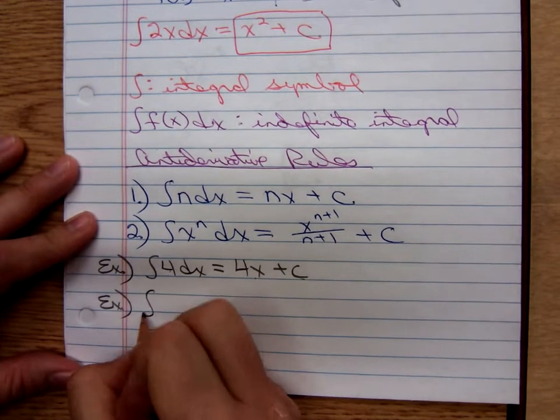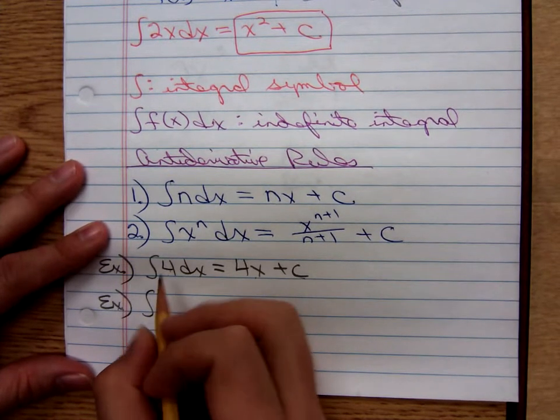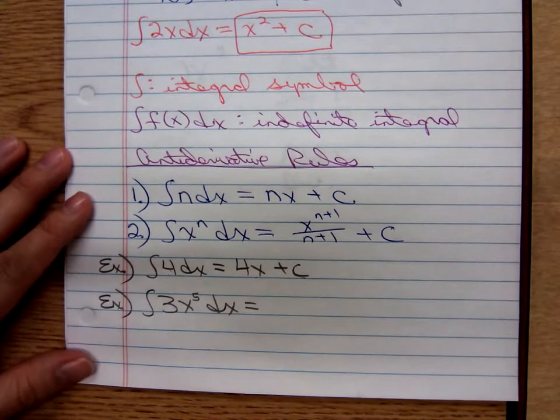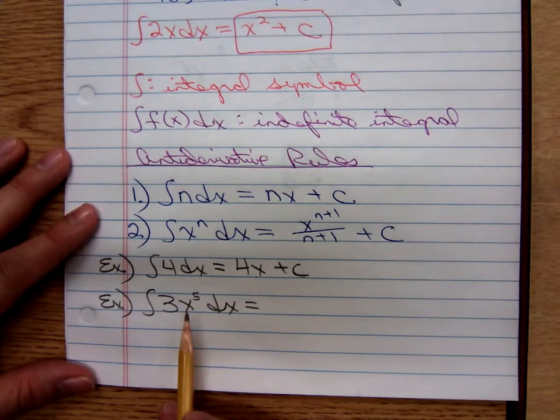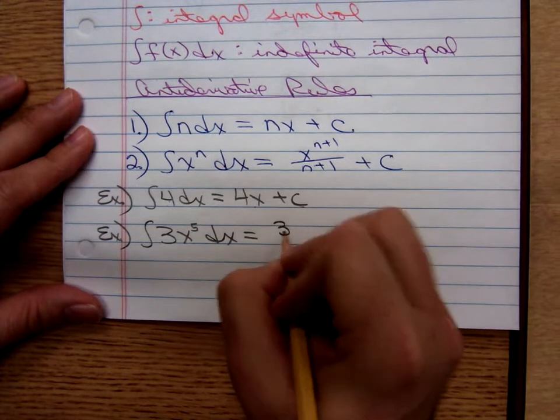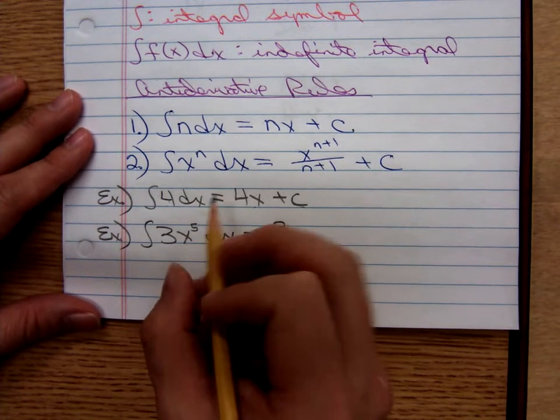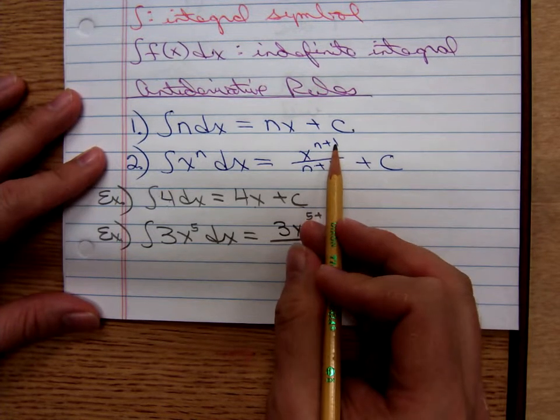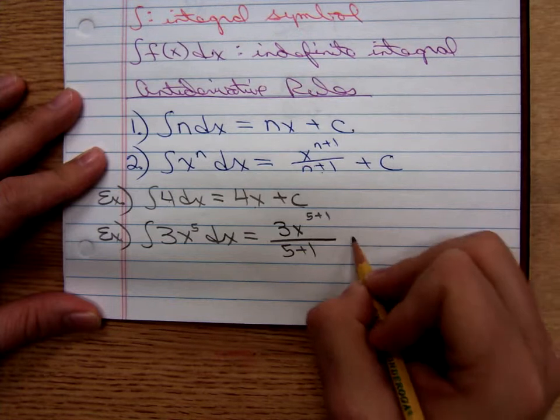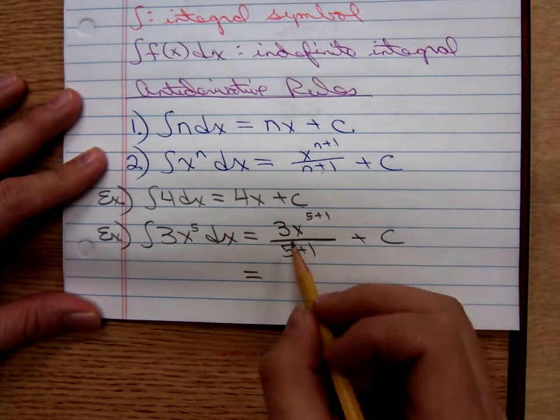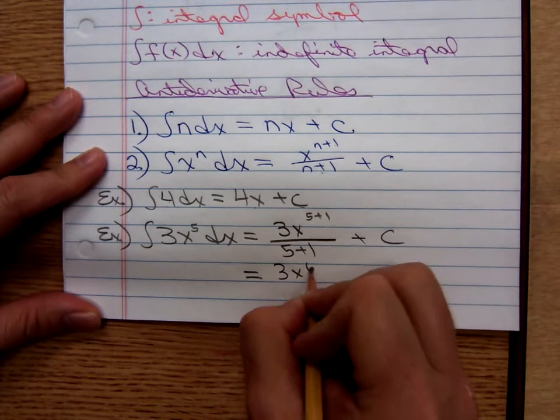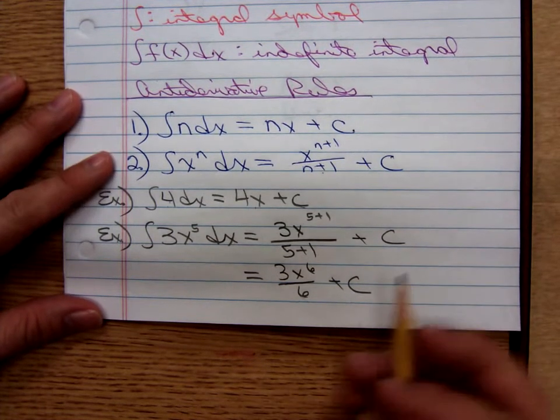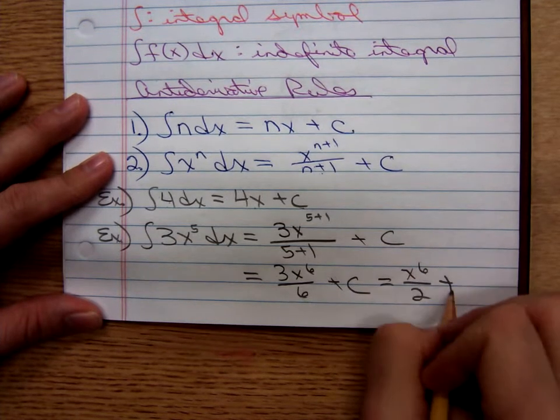And the antiderivative of, let's say we add 3x to the fifth. What can we differentiate to give ourselves 3x to the fifth? We take the 3. We're going to do the opposite operation in the opposite order. So we have to add 1. And then we divide. We add 1 to get the new exponent and then we divide by the new exponent, plus the constant c. So that's 3x to the sixth all over 6, plus c. And this is just a convenient coincidence. We can cancel there and just get x to the sixth over 2, plus c.